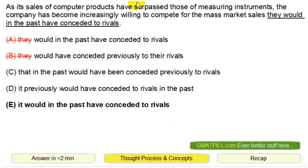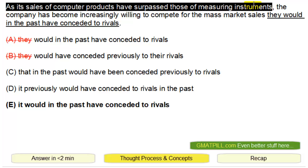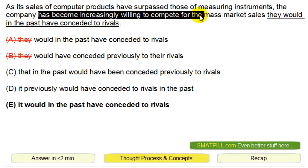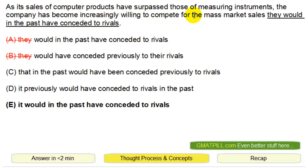In terms of structure, we have 'as this thing is happening' — and I actually didn't even read what's happening here. I know there's a comma and it starts with 'as' and it's not underlined, so I don't need to waste my time reading this part. All I need to know is: as something is happening, the company — the subject — has become increasingly willing to compete for sales, 'it' — instead of 'they' — 'it.' In common speech a lot of people say 'they,' but on the GMAT you want 'it.' So: the company, it, would in the past have conceded to rivals.